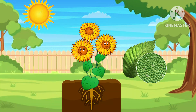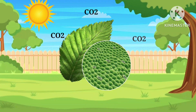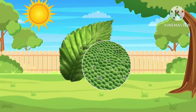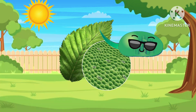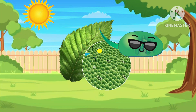These stomata absorb carbon dioxide from the air. These tiny pores now contain water, carbon dioxide, and nutrients. Now comes the turn of chlorophyll. Chlorophyll absorbs sunlight and transforms carbon dioxide and water into oxygen and glucose.